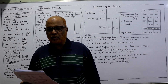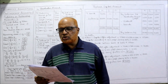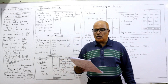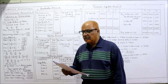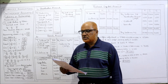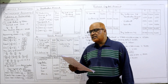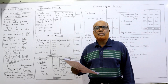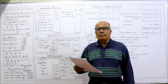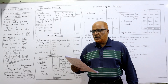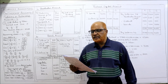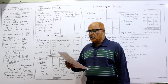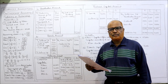Now see problem number 14. The following is the balance sheet of Khan, Ismail, and Giri, who share the profits and losses in the proportion of one-half, one-third, and one-sixth respectively. So three partners are there: Khan, Ismail, and Giri, with profit sharing ratio 1/2, 1/3, and 1/6. The balance sheet shows creditors 5000, capitals: Khan 57,000, Ismail, Giri — and assets: land and building, machinery, stock, debtors, cash.